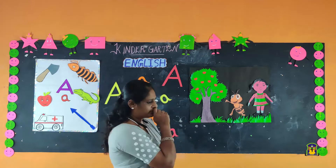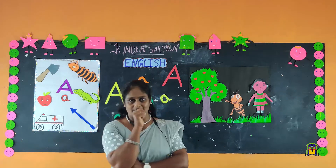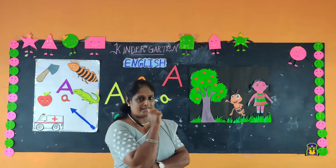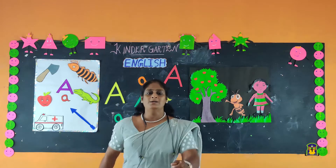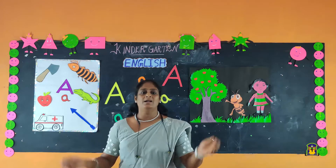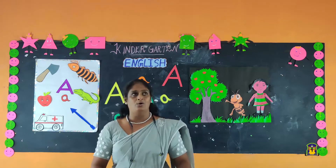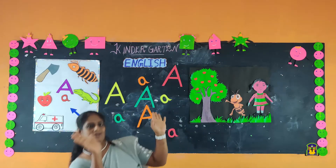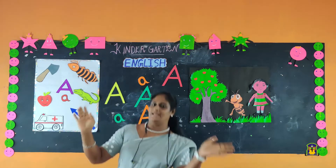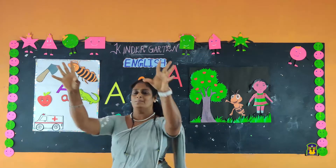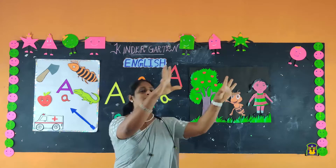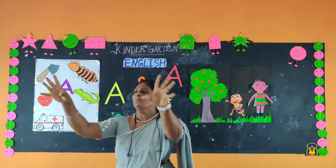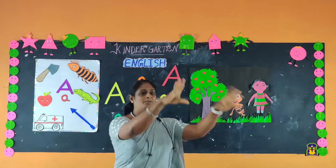the little ones go marching. They all go marching down to the ground, to get out of the way. Boom, boom, boom. Boom, boom, boom.